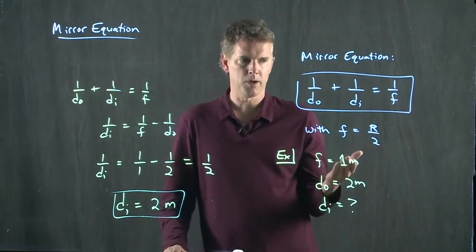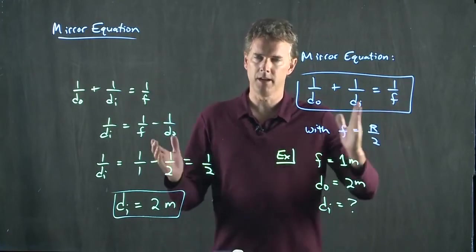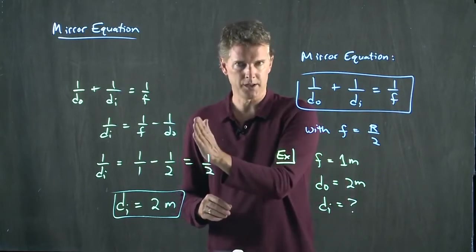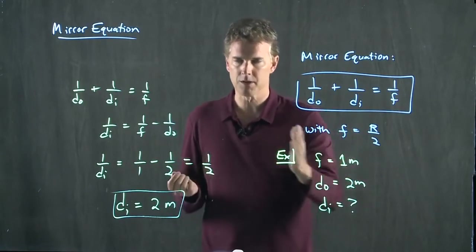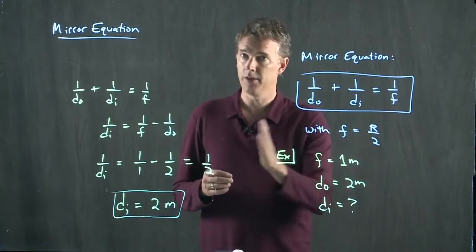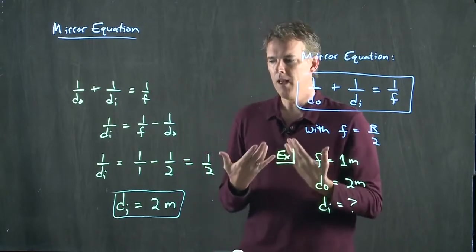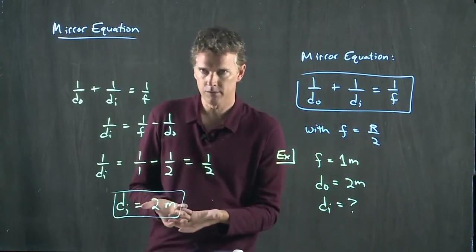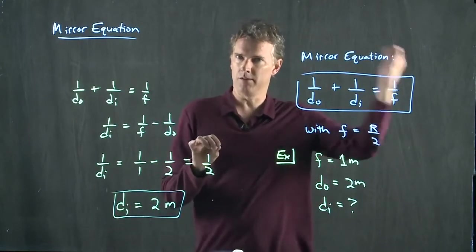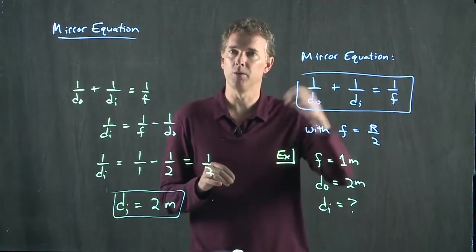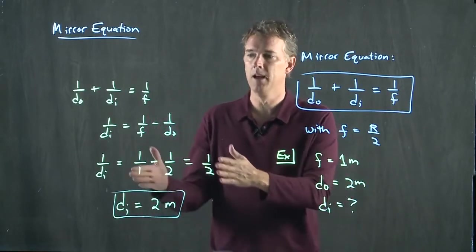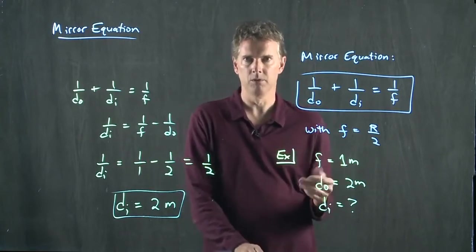In this mirror equation, all these numbers are positive if they are to the left of the mirror. So DO measured to the left is a positive number. DI measured to the left is a positive number. F measured to the left is a positive number. If you solve the equations and you end up with a negative sign for DI, that means the image is on the other side of the mirror. It's on the right side of the mirror. And that will happen when you start to get very close to the mirror.